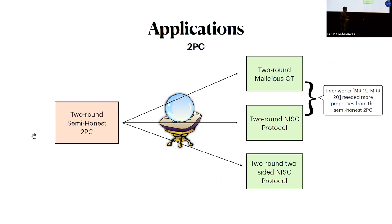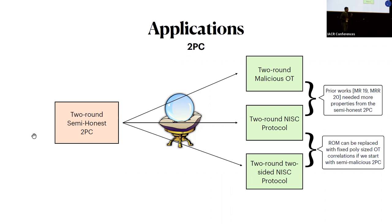We can replace the random oracle model with a fixed polynomial-sized random OT correlation setup, with the caveat that we need to start with a semi-malicious 2PC instead of semi-honest. A semi-malicious 2PC is one where the adversary still follows the protocol but could choose an arbitrary random tape. There is a simple transformation to construct a semi-malicious 2PC in the random oracle model based on semi-honest 2PC — this is how we can start with a semi-honest 2PC in the random oracle setting.